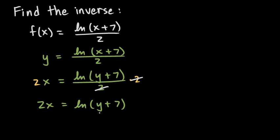Now we need to isolate y algebraically. The y is inside the natural log. Natural log, remember, is log base e. We can get rid of a log base e by using a base-e exponent — so we exponentiate both sides with a base of e. The left side becomes e to the power of 2x. On the right side, the base-e exponent and the base-e log cancel out, leaving y plus 7. So e to the 2x equals y plus 7.